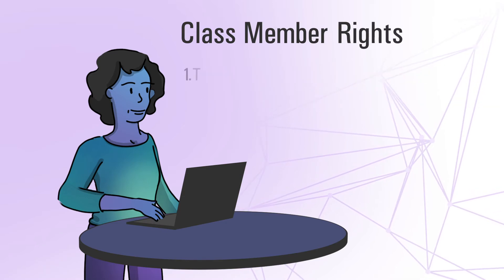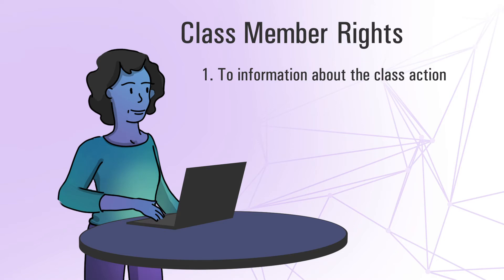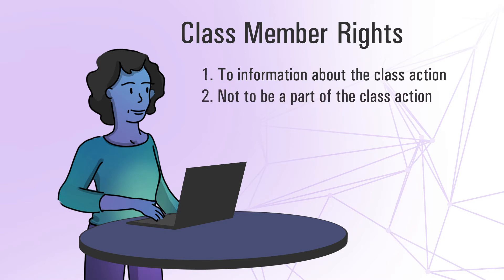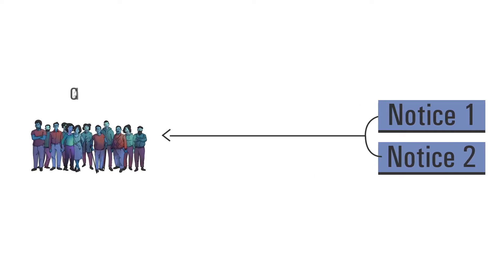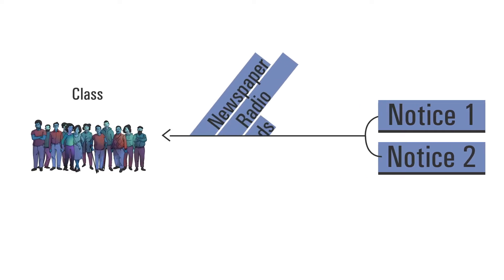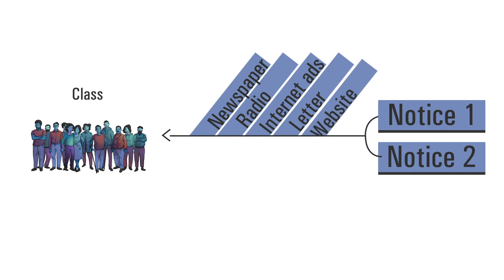Anita has the right to be given information and official notices about the class action, not to be a part of the class action, and to object if she disagrees with a proposed settlement. There are two official notices generally provided in class actions. These notices are distributed to class members in various ways — through newspaper, radio and internet ads, or in other ways like direct letter mail. These notices are almost always posted on the class actions website.